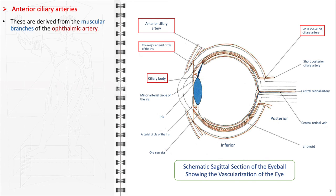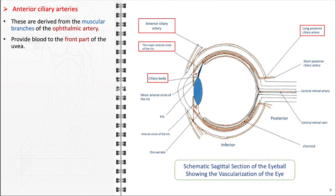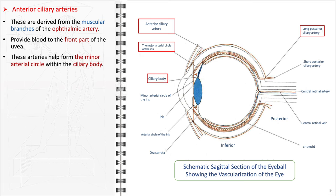In addition, the anterior ciliary arteries, which emanate from the circulatory network of the extraocular muscles, contribute to the blood supply of the anterior portion of the uvea and assist in forming the minor arterial circle found within the ciliary body.